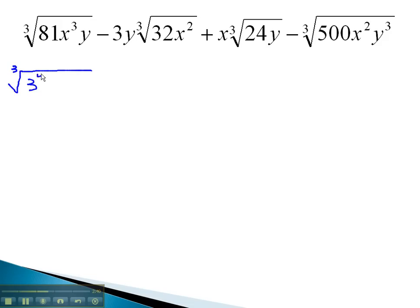81 is 3 to the 4th power, x cubed y, minus 3y times the cube root of 32. Its prime factorization is 2 to the 5th, x squared, plus x times the cube root of 24y. 24's prime factorization is 2 cubed times 3y.